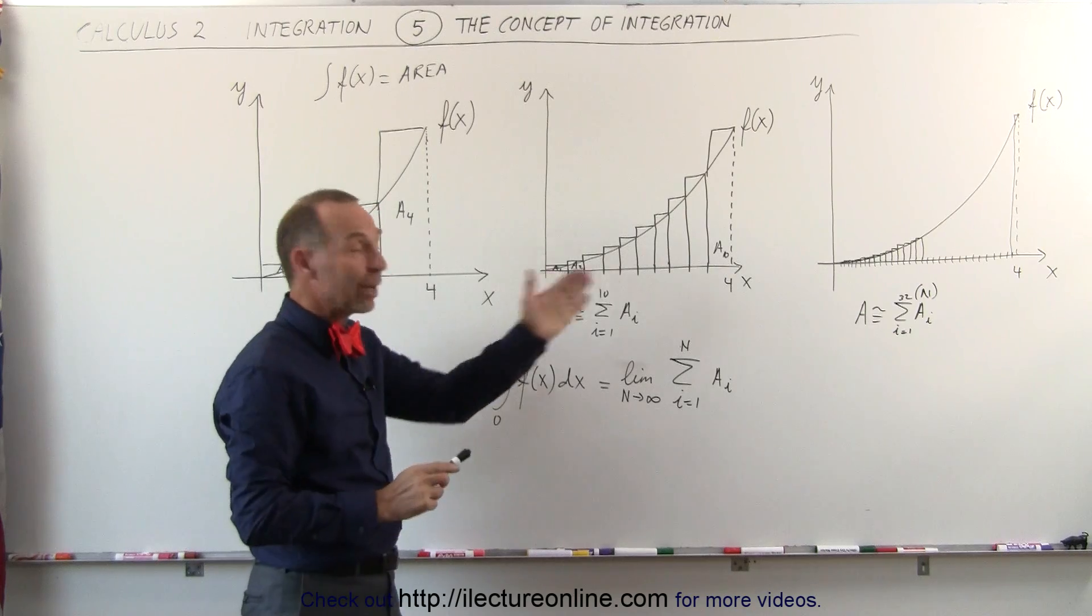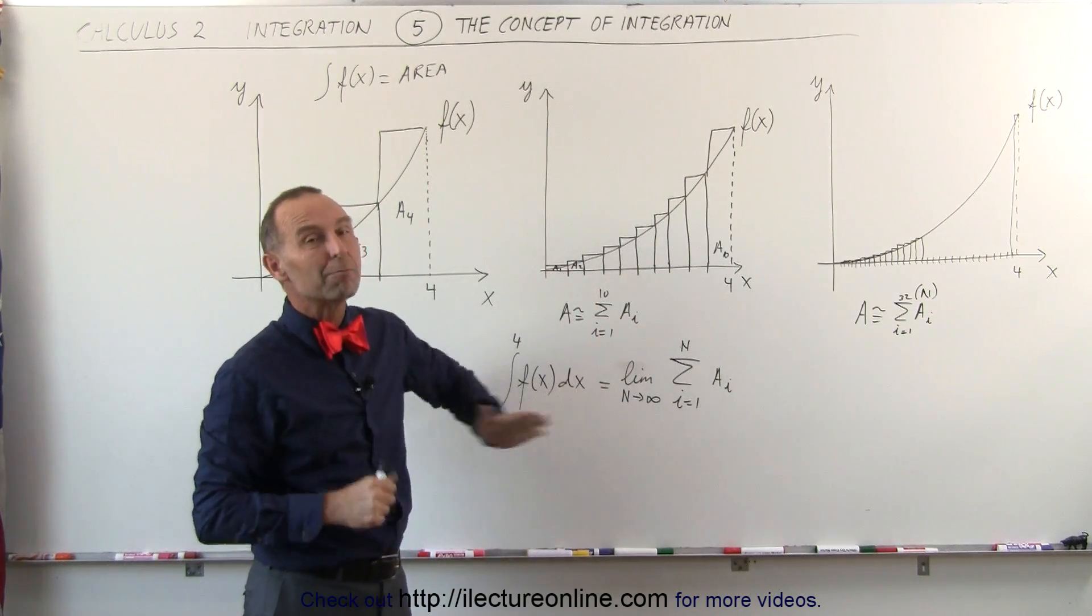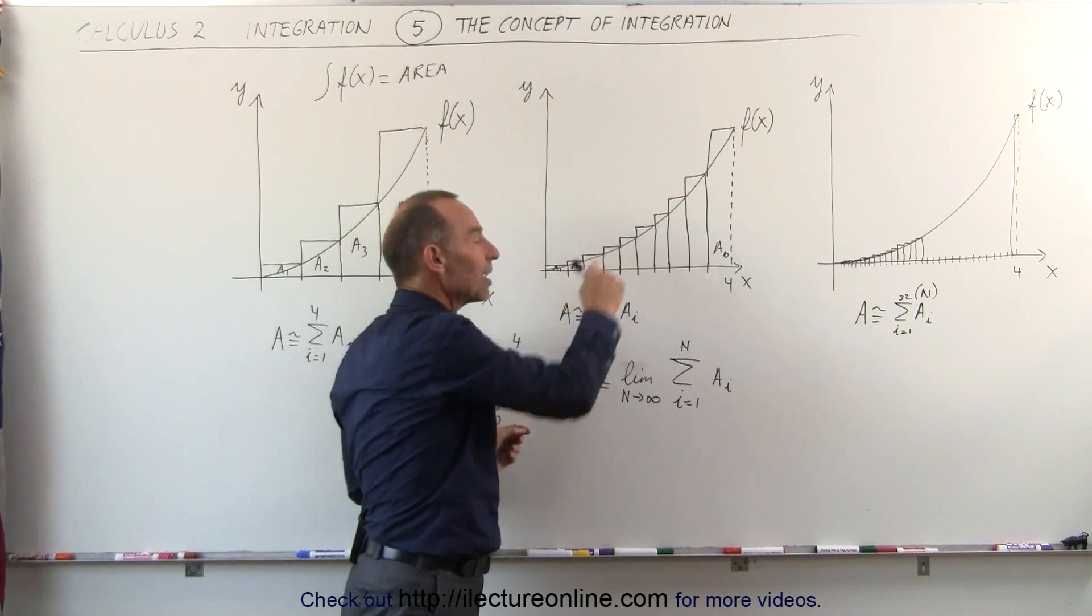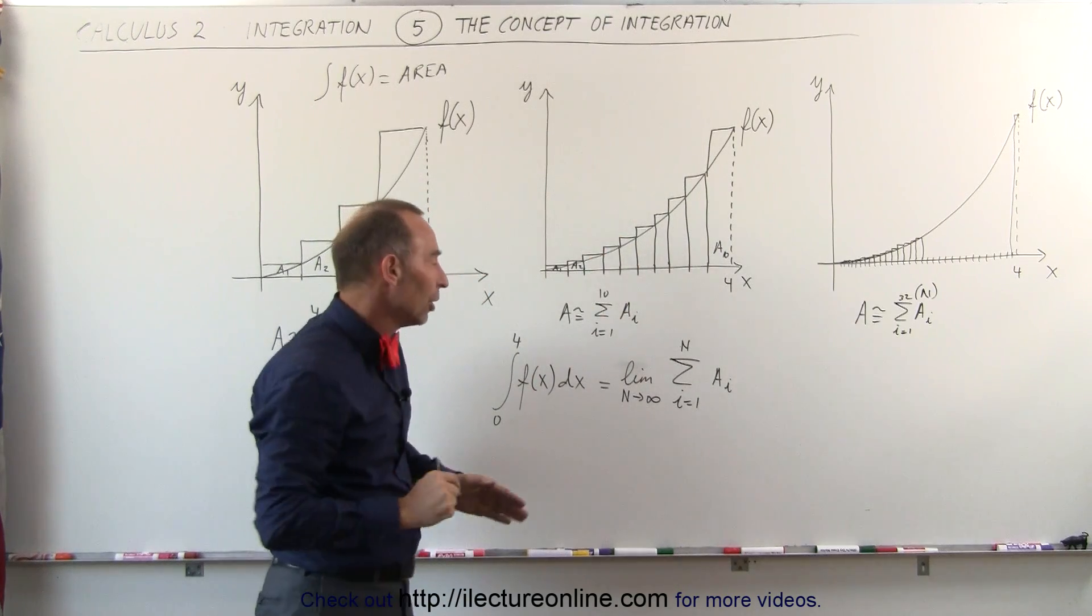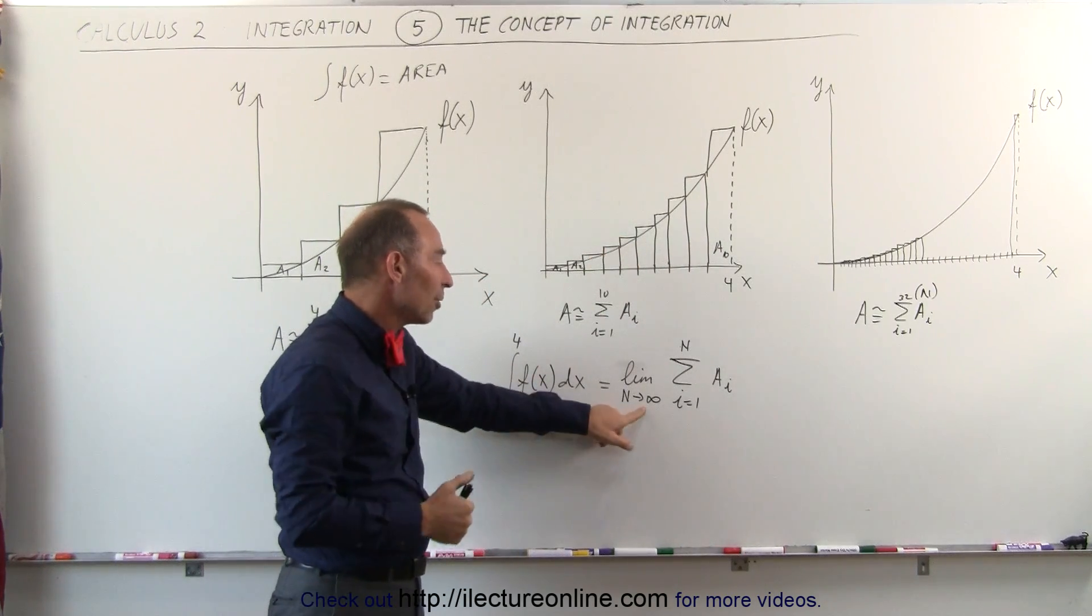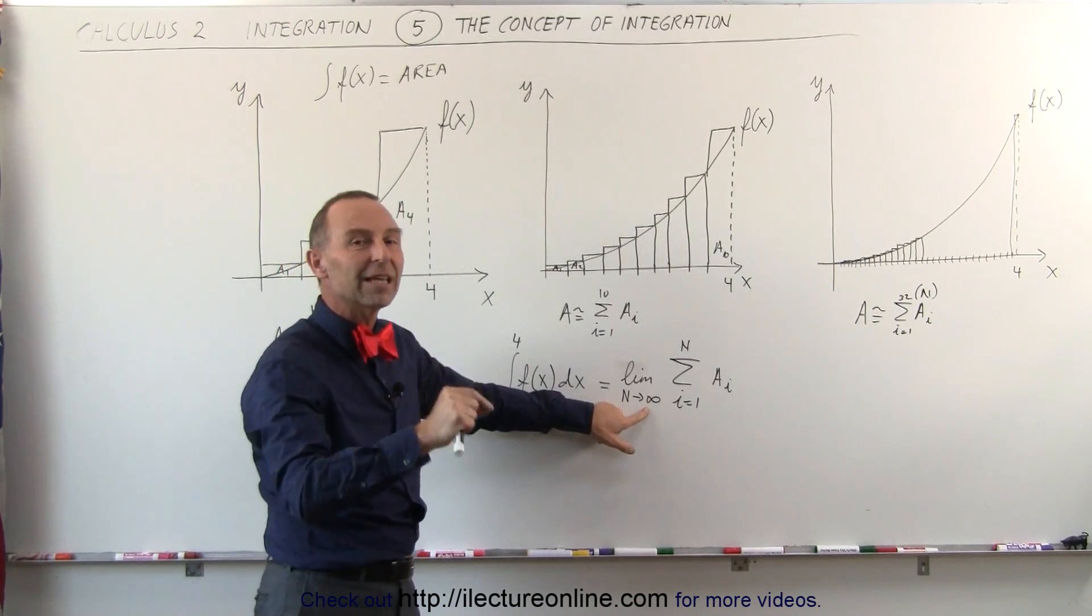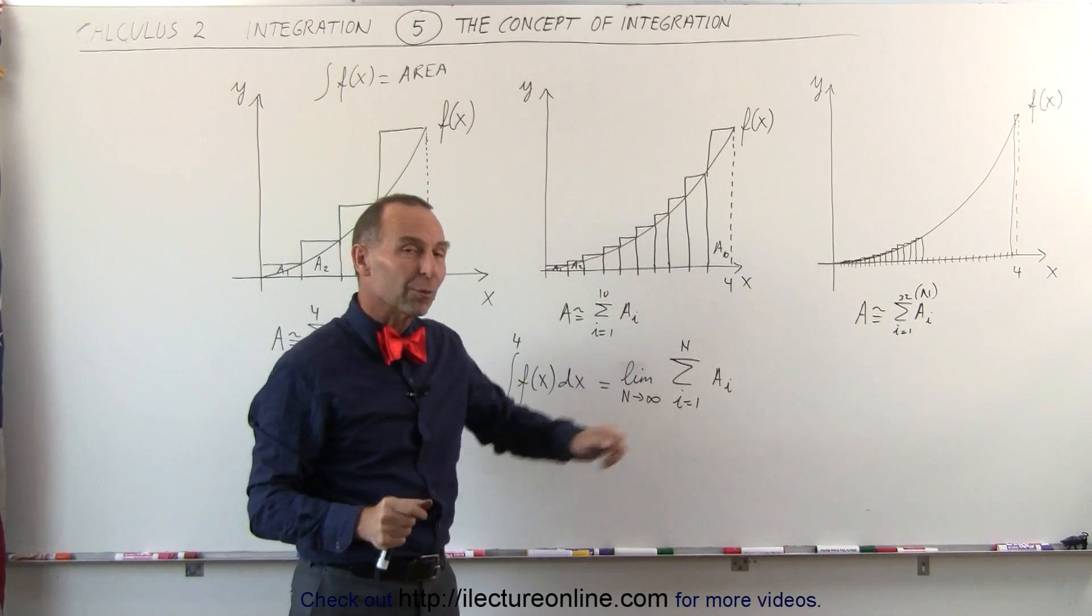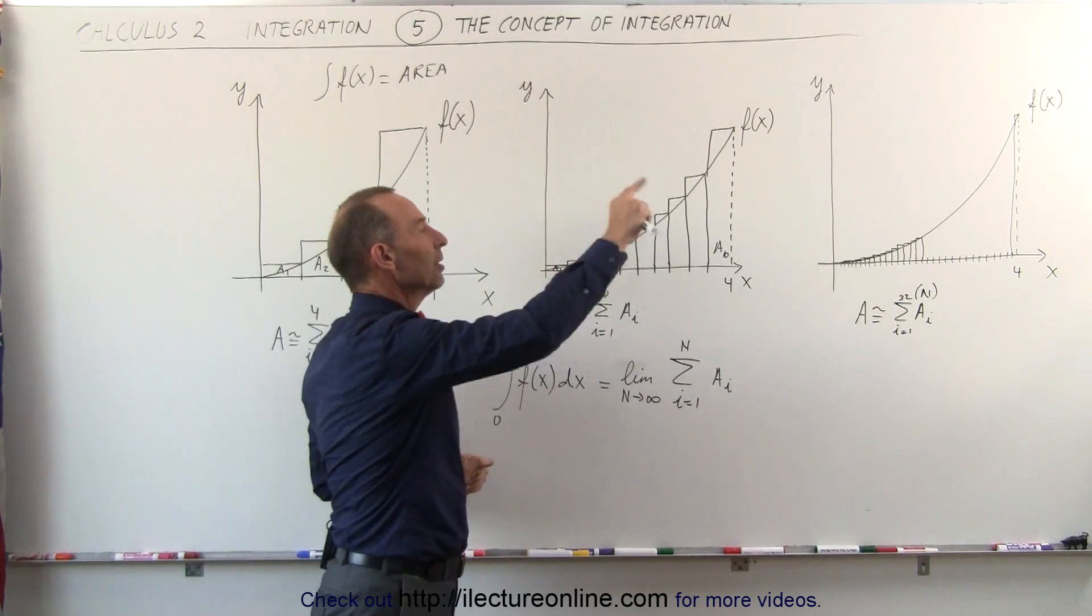In other words, if we just make enough rectangles, millions of them, billions of them, so they're so thin that the additional area sticking out is so minuscule, then in essence, if I go to the limit where I let n go to infinity, an infinite number of rectangles, the area summed up by all those rectangles will exactly equal the area underneath the curve.